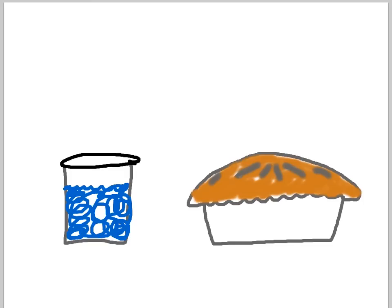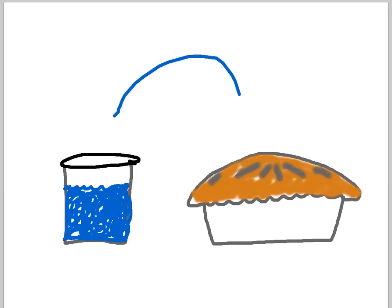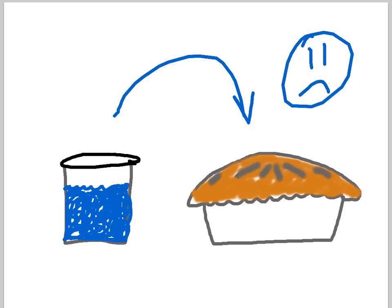Let's say you were baking a pie, a blueberry pie, and you decided that you were not going to follow the directions exactly. You were going to put the blueberries in after the baking of the pie. You wouldn't get the same outcome, would you? Same thing with order of operations.